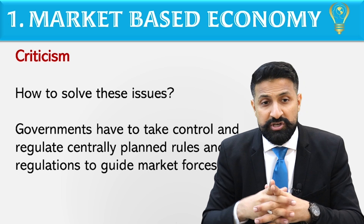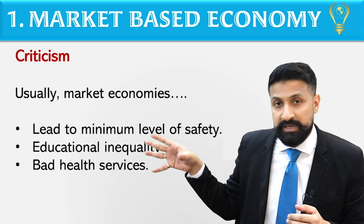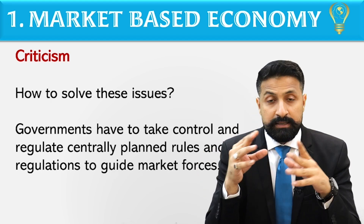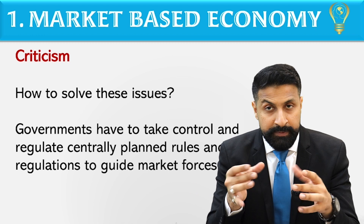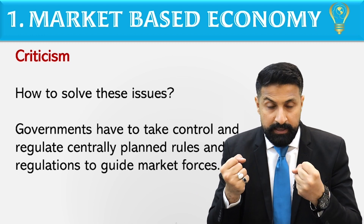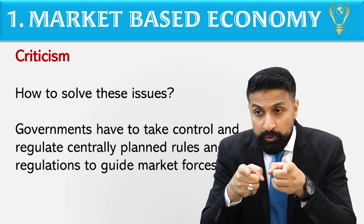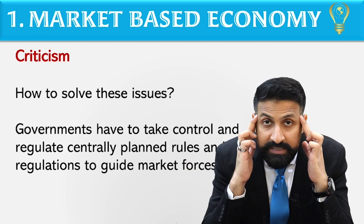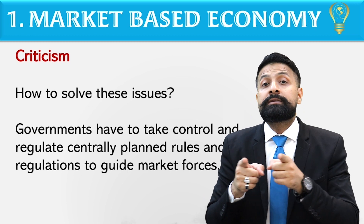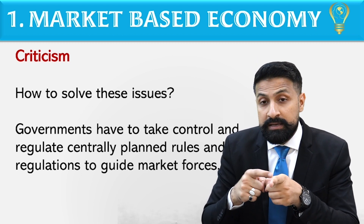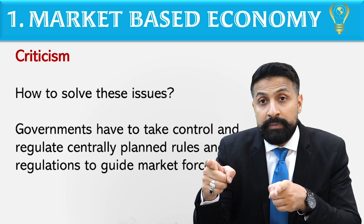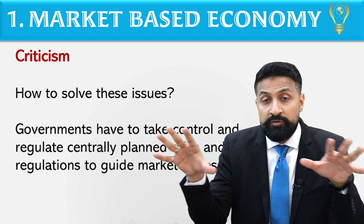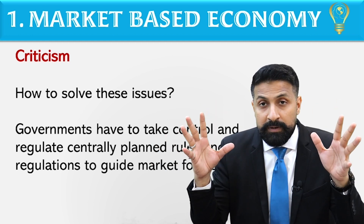Now the question is: how to solve these issues? The government must take things into its own hands. The government must intervene in the market. The government must take control, set rules and regulations, and build policies — not senseless policies, but calculated measures. Calculations must be made about what effect a decision will have on the economy — on the buyer side, supplier side, dollar side, imports, exports — every direction must be examined.